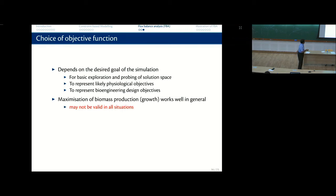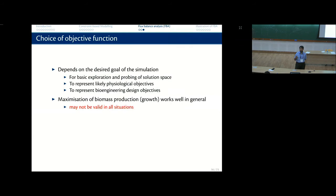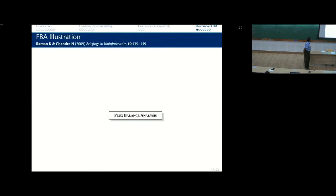To represent likely physiological objectives, we use biomass. To represent bioengineering design objectives, we maximize penicillin production. I once again note that biomass production works well in general but may not be valid in all situations — if the cell is under starvation, it's not going to maximize growth. It will optimize something else, like minimizing nutrient uptake.